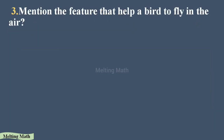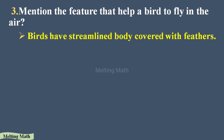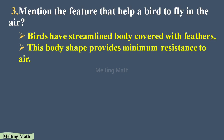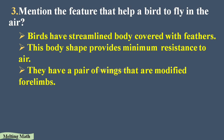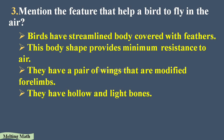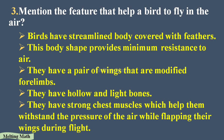Question three: mention the features that help a bird to fly in the air. Birds have a streamlined body covered with feathers. This body shape provides minimum resistance to the air. They have a pair of wings that are modified forelimbs. They have hollow and light bones. They also have strong chest muscles that help them withstand the pressure of the air while flapping their wings during flight.